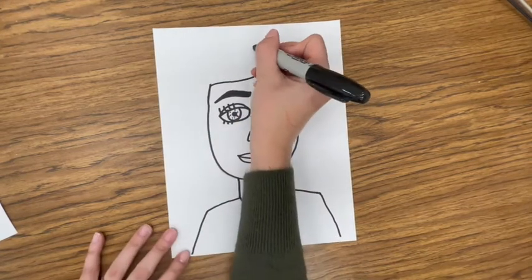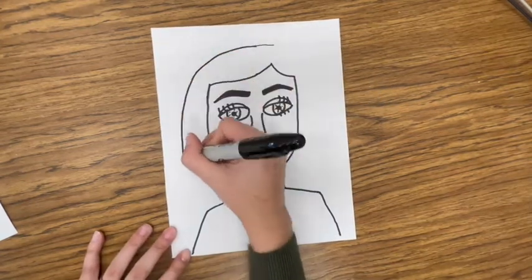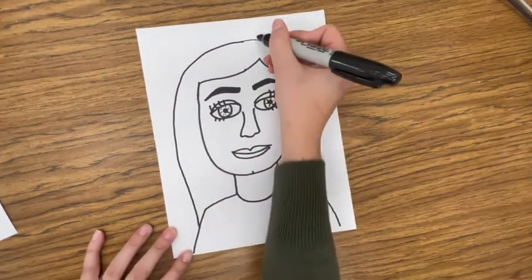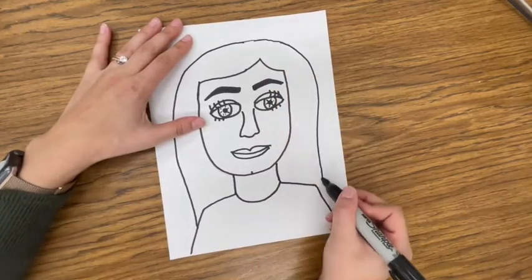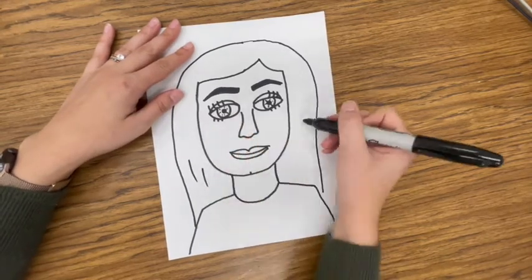Okay, now I can do the hair. I'm just going to go behind the shoulders. If you wanted the hair to go in front of the shoulders, you could do the hair first. I'm going to put a couple lines in there for texture.